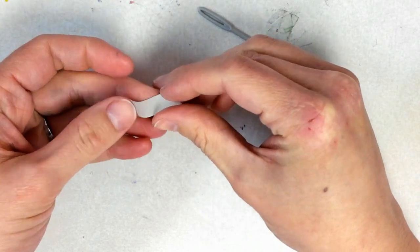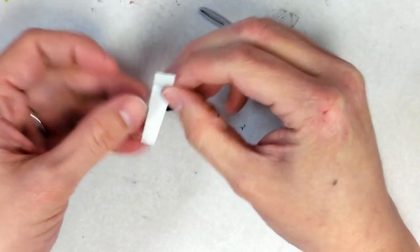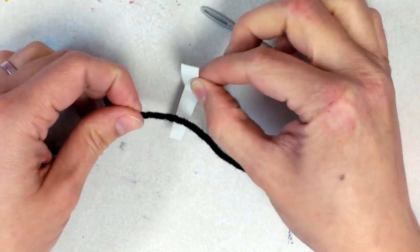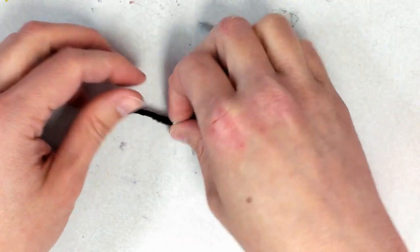So what I do with this folded piece of paper is, it's like a mouth, so it chomps down on the yarn.